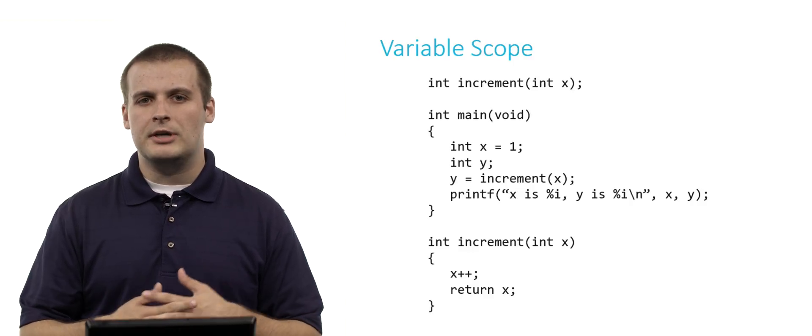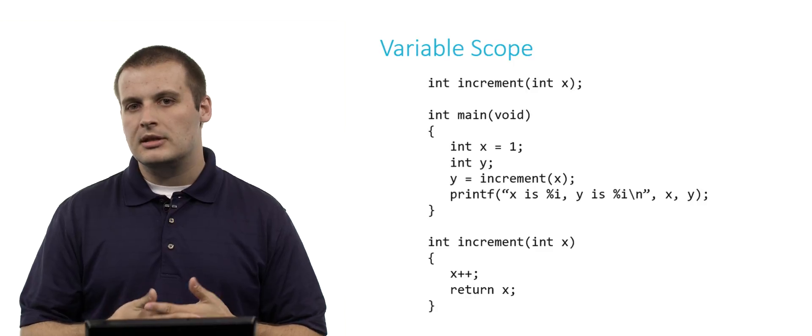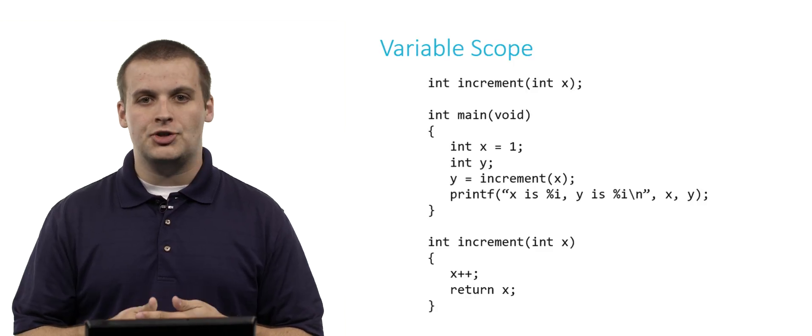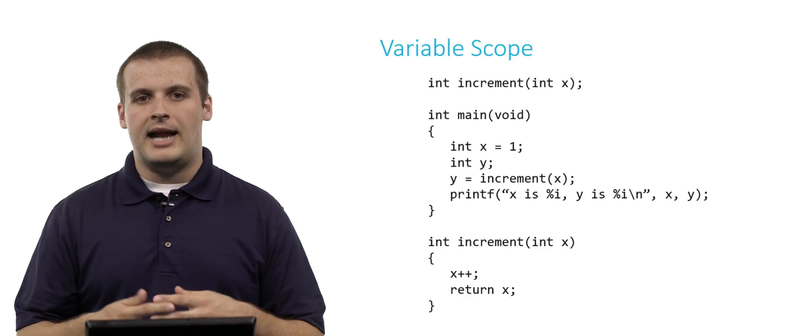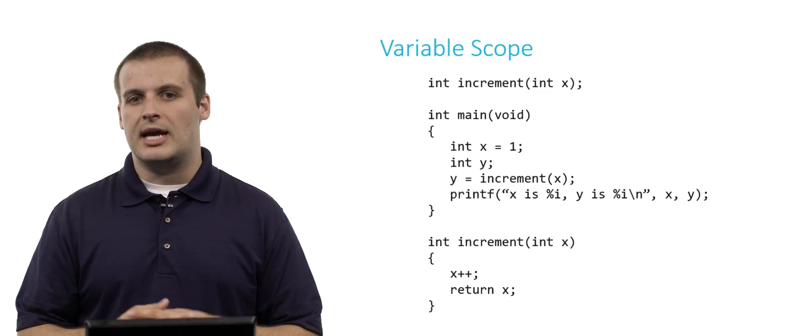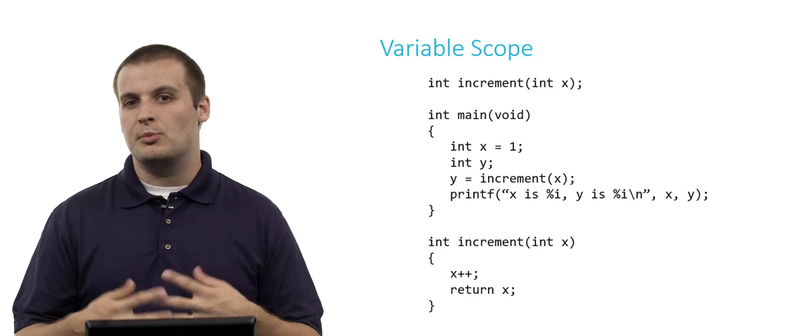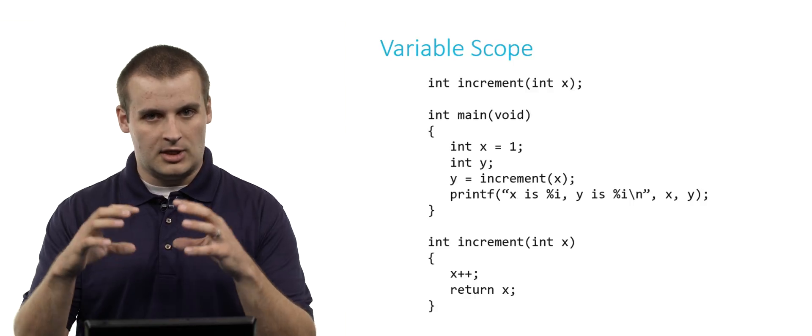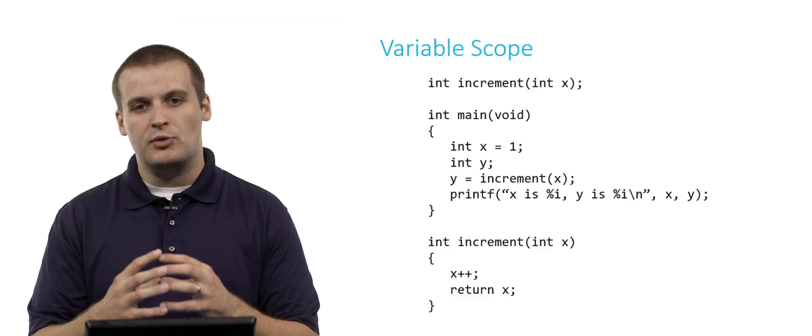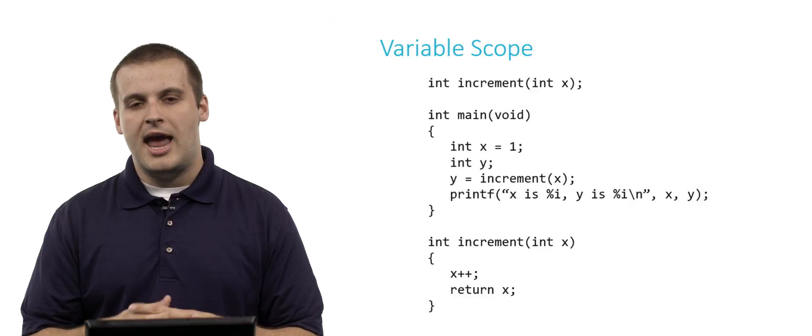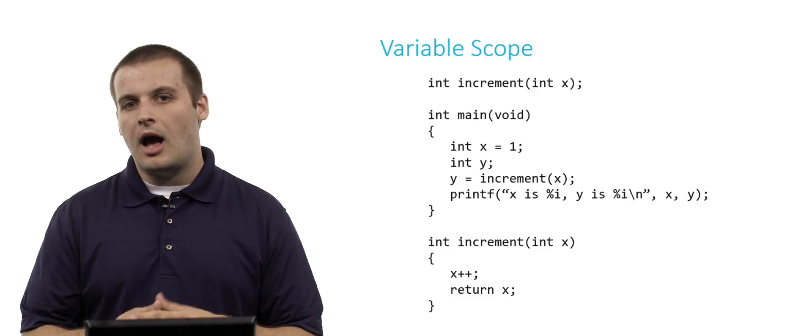You can see at the top we have a function declaration for a function called increment. That function takes a single parameter, an integer, which we call x, and it outputs an integer. That's the return type at the beginning. Then we have main, a couple of lines of code in main, the last of which is a print statement. And remember, that's the question here. What is actually going to be printed at the end of this function? And then we actually have the definition of increment below.